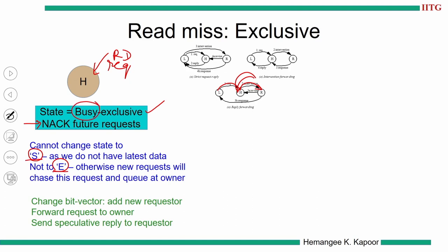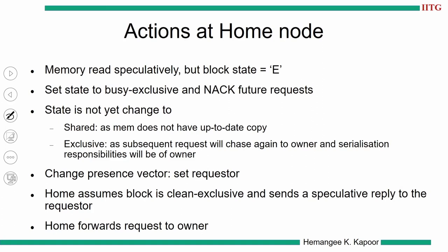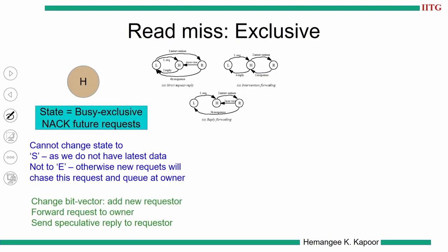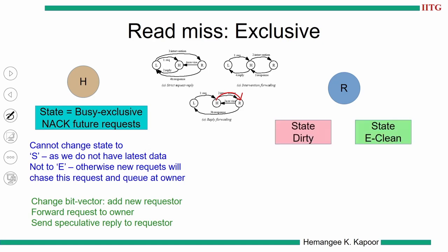Once this is done, at the end of this complete reply forwarding, we will change the bit vector and send a speculative reply. These are the actions which happen at the home node: do not change to shared, do not remain in exclusive, become busy, add the new requester to the presence bit vector, and then forward the request to the owner. At the owner, when the intervention message reaches, it has to check whether the block with it is clean or dirty. In case the block is dirty, it has to send the data to the requester and send a revision message to the home node, and in this revision message, you send the updated copy so that the main memory gets updated.